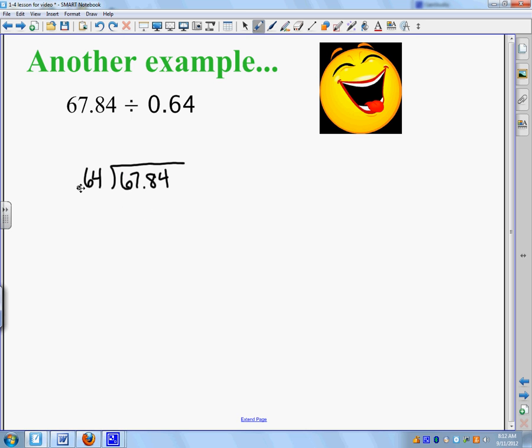Now, I have to move my decimal two times, because I can't have a decimal point in this number. So, that means I have to move this decimal two times also, and put it right up top. All right, so let's look. 64, I'm not going to try and put it into 6,784. That's way too hard. So, just go 64 into 67. That's pretty easy.